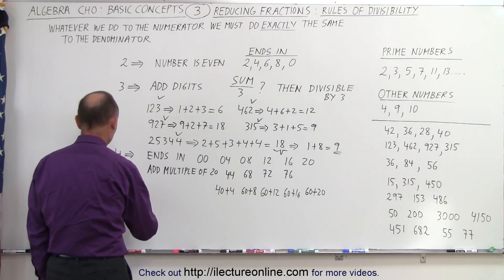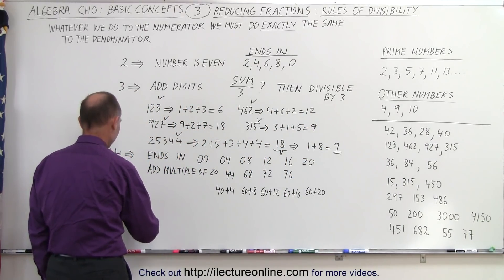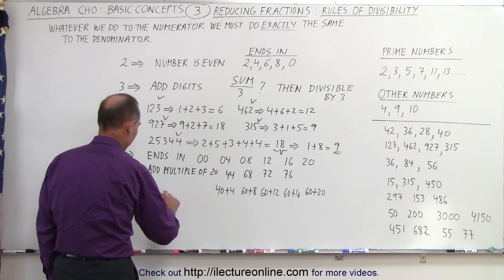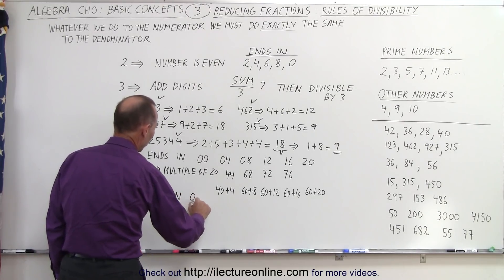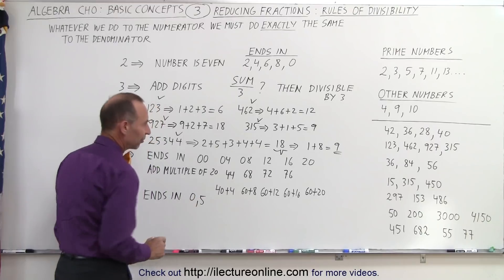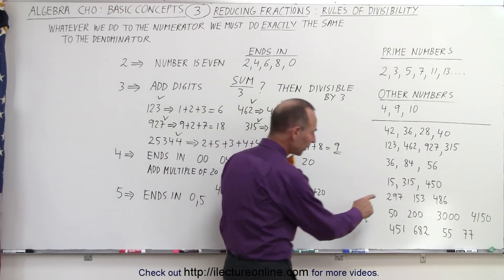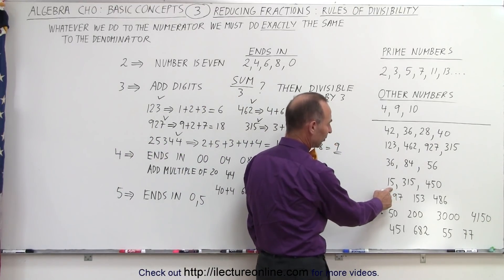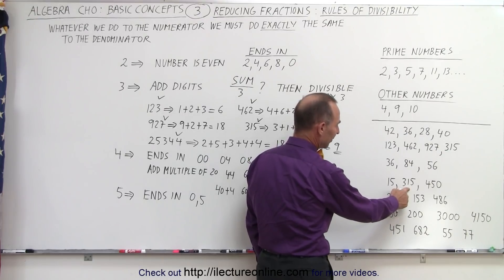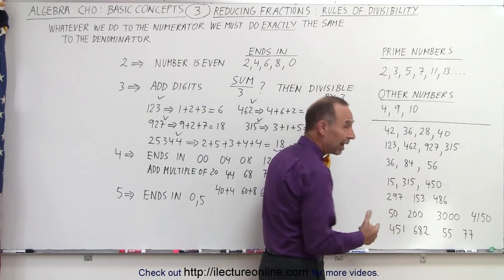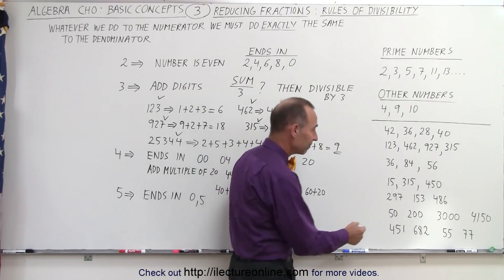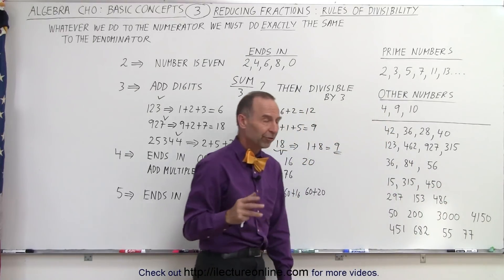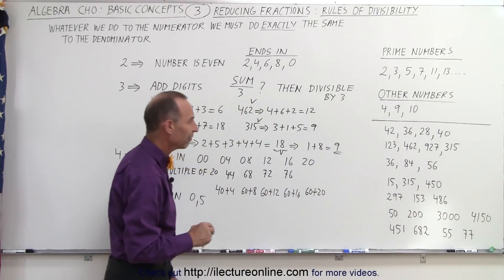For the number 5, it's very straightforward: the number must end in either a 0 or a 5. So 15 ends in a 5 — divisible by 5. 315 ends in a 5 — divisible by 5. And 450 ends in a 0, so it's also divisible by 5.